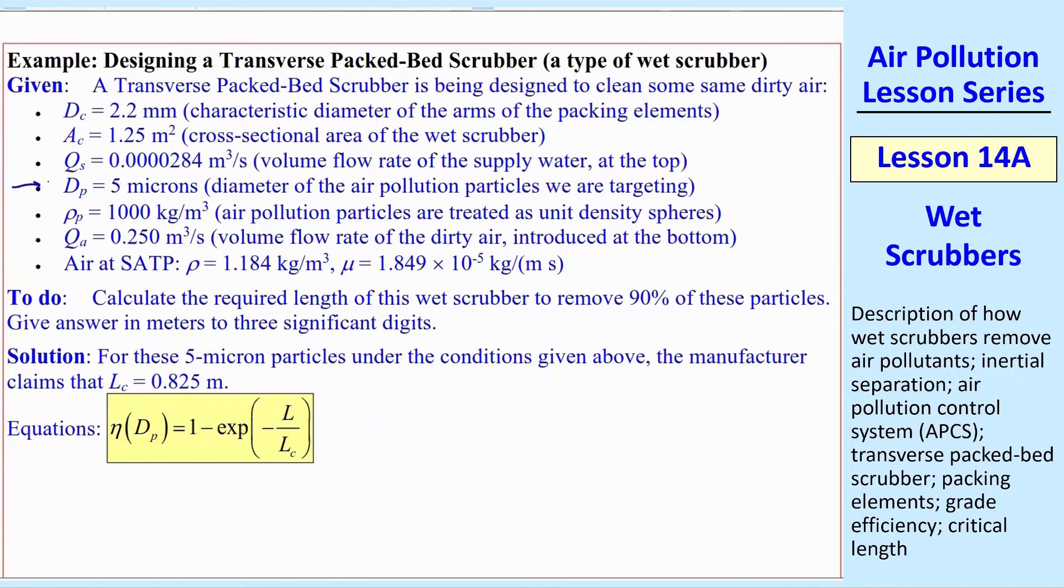The particles we're interested in are 5 microns. But we're not really using any of that stuff because we'll assume that the manufacturer has measured this LC. So for these 5 micron particles, under the conditions given above, the manufacturer claims that his LC is 0.825 meters.